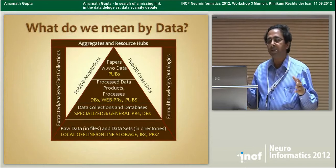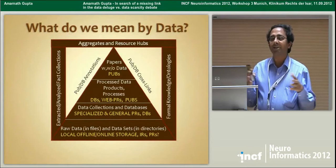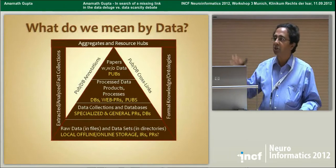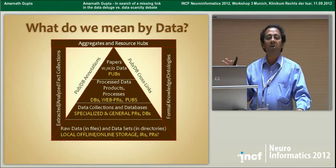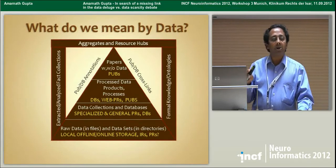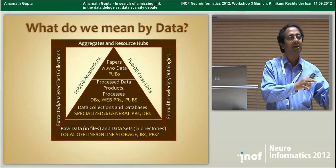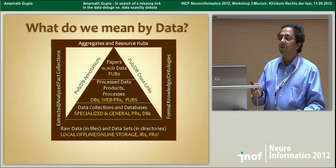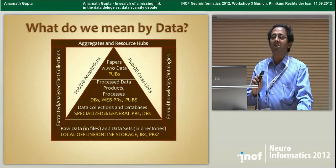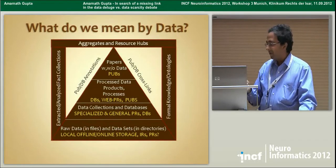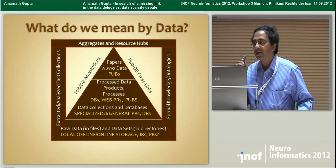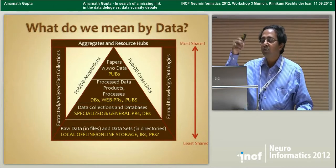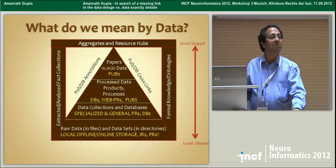In the business of data sharing today, we have all of these elements. So we have a lot of duplication. We have a lot of things that are represented one way in one place and represented another way in another place. But this is what we have. The thing about the pyramid is that the top part of it is more shared than the bottom part.